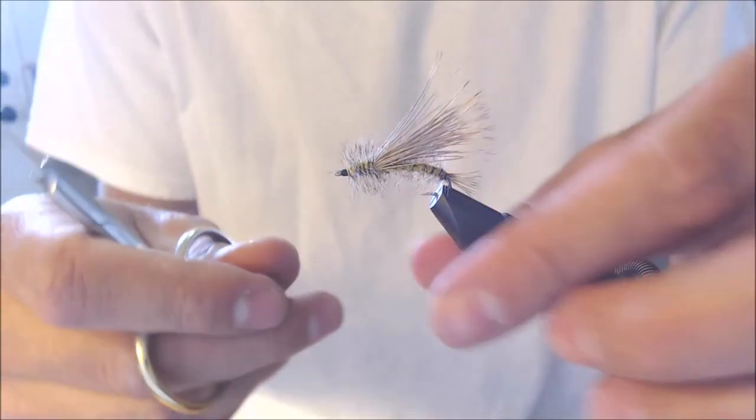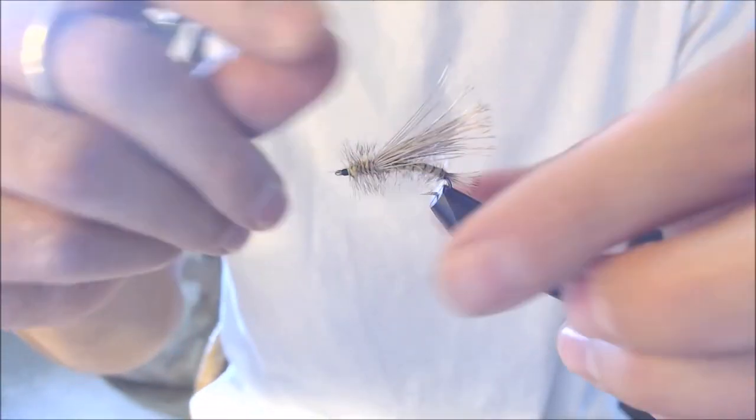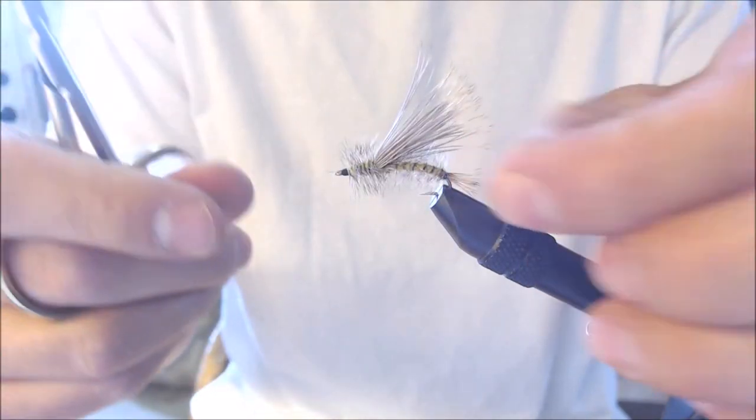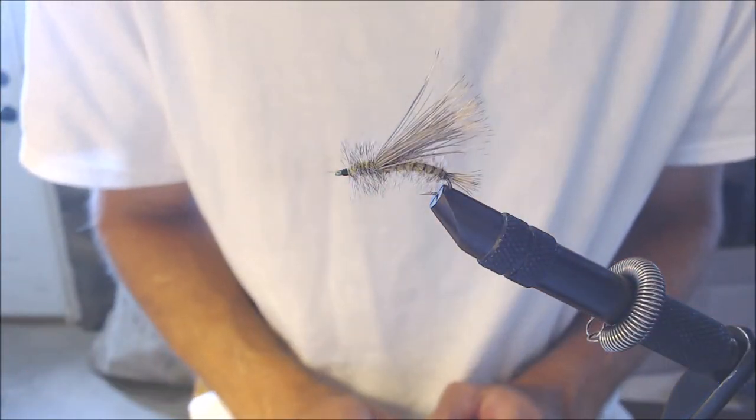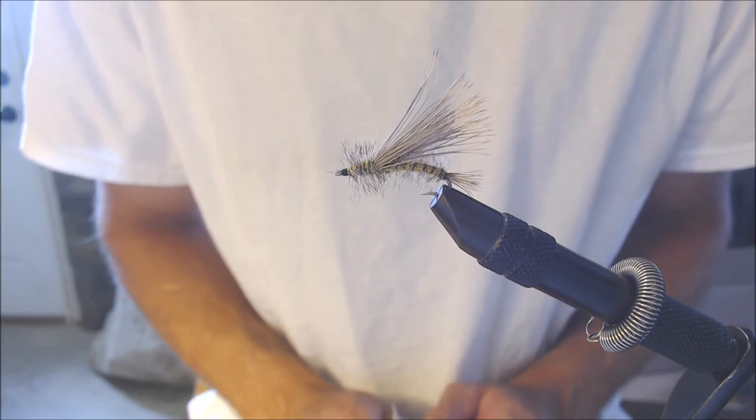Snip it off. Check the elk hair here. Check the tail. Here you have it. The golden stimulator.